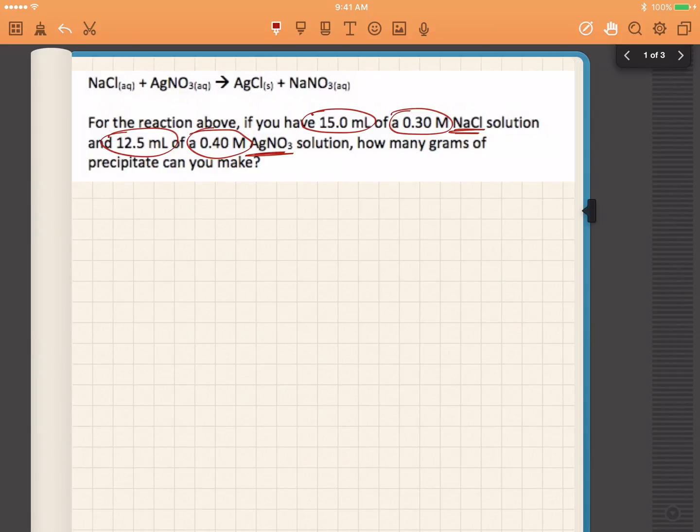The first thing I'm going to do is convert this one, the 15.0 milliliters, to liters. 15.0 milliliters is 0.0150 liters, right? Because this will go over 1, 2, 3 times to get 0.0150.